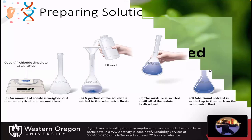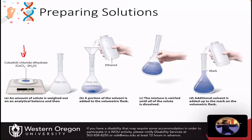To prepare solutions in the lab, you want to start at the balance. Measure out your concentration of your analyte or your sample. Put it into the volumetric flask, and then you want to add about half of the volume. Swirl it until it's fully dissolved, and then you're going to add solvent up to the mark. Then cap the volumetric or put parafilm on the top and invert it several times so that you mix it completely.